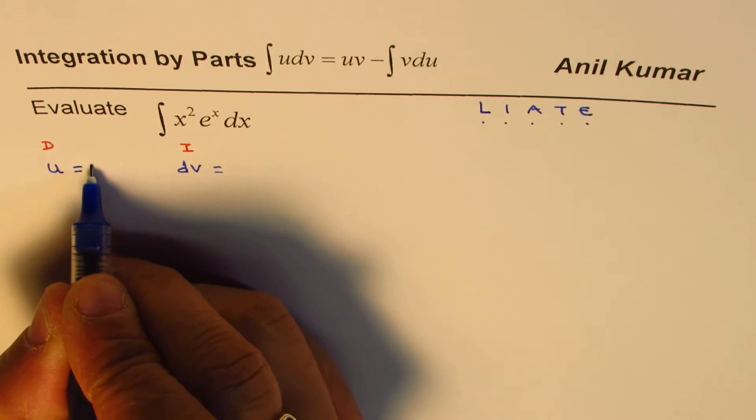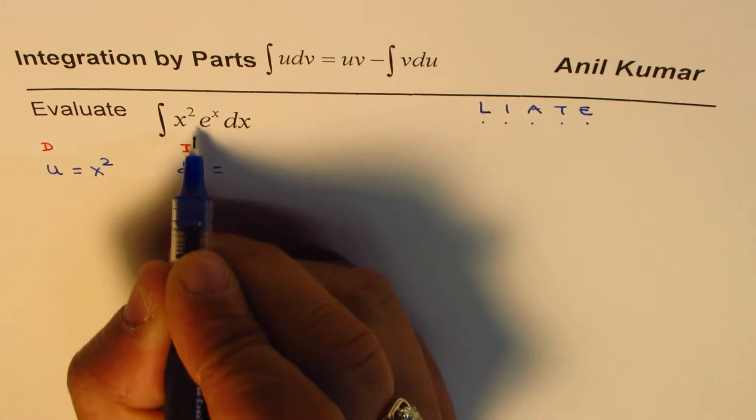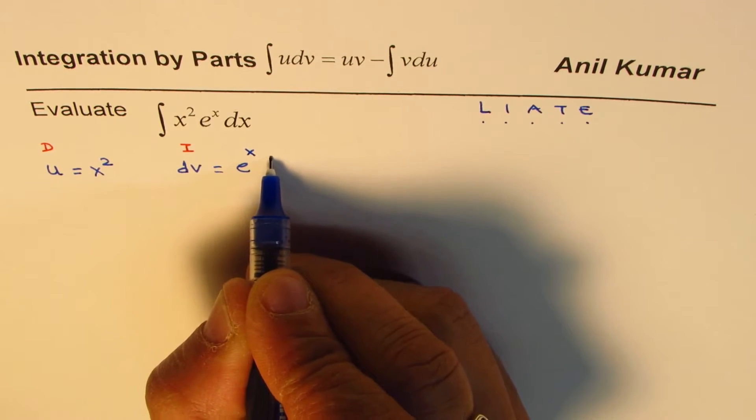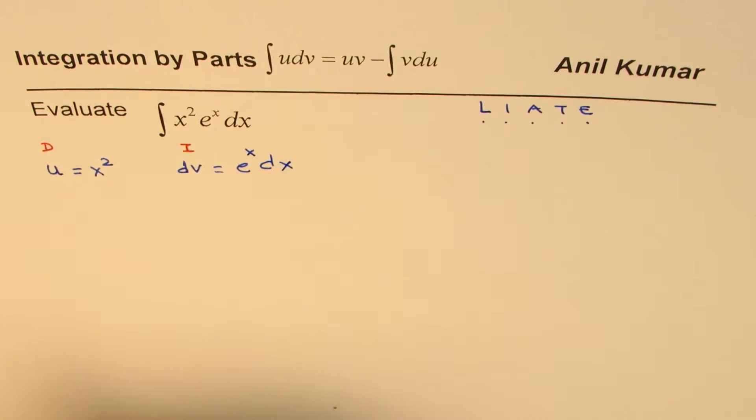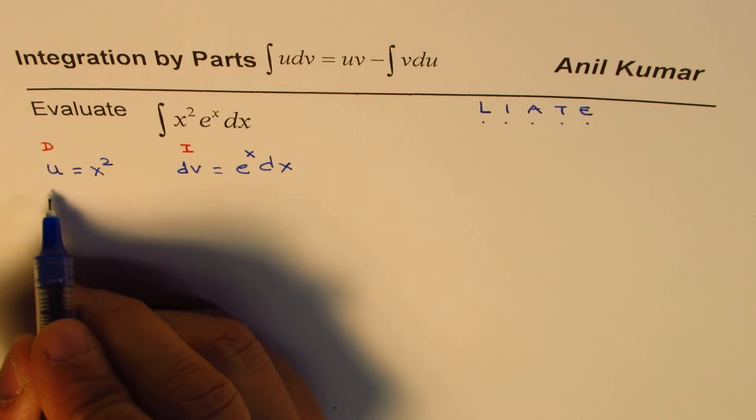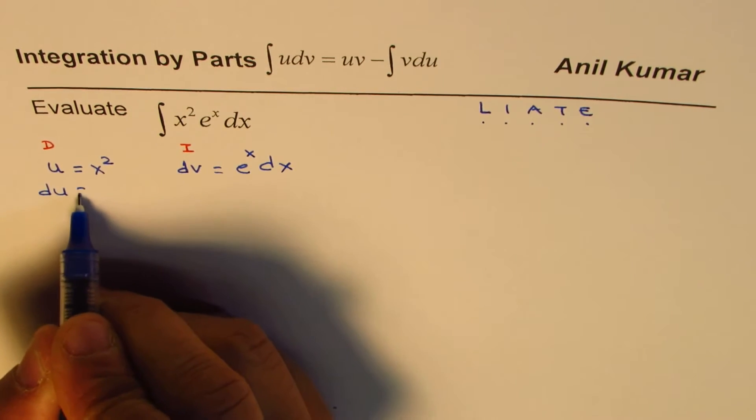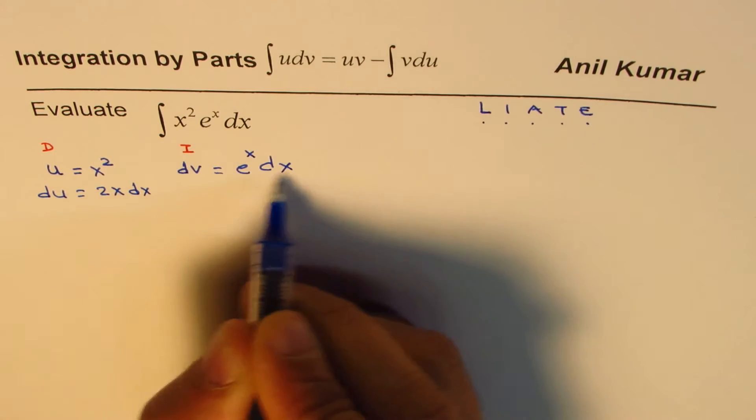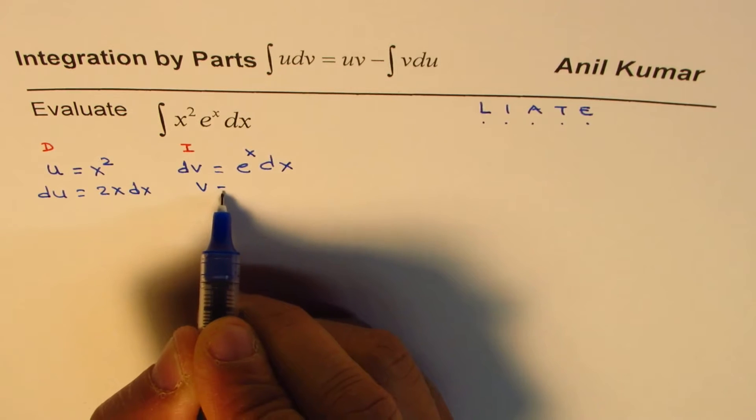So we'll write u as x squared and the integral part we'll select as e to the power of x dx. Once we have done that, let's find what du is. Du is 2x dx and when you do integration of this part we get v equals to e to the power of x.